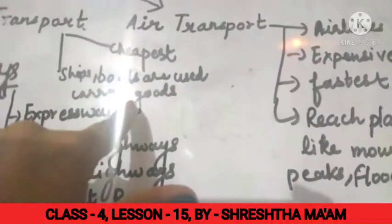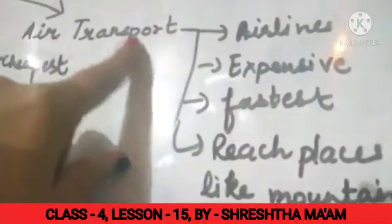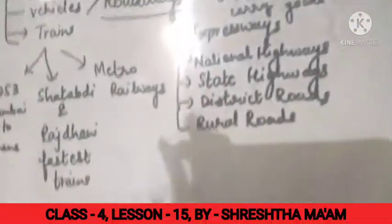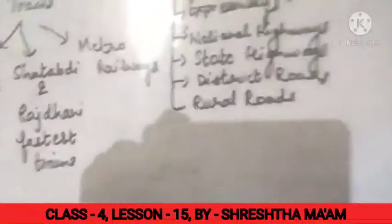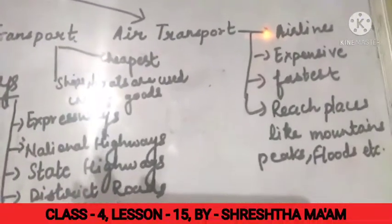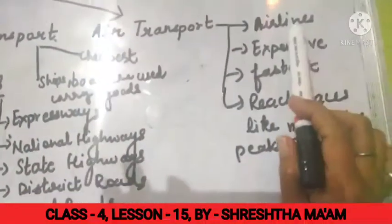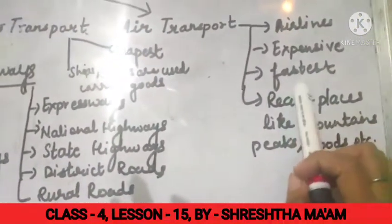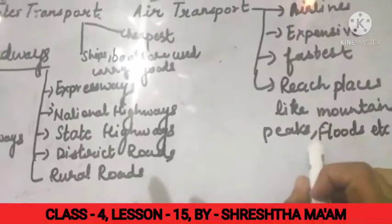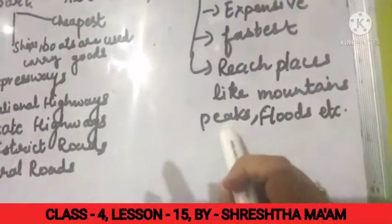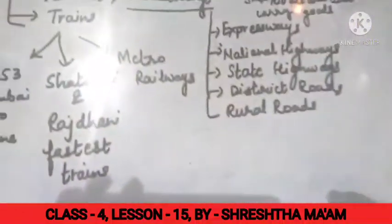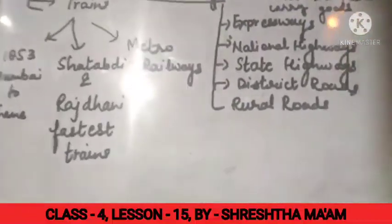Air transport consists of things by which we can travel from one place to another through the air. Airlines are very expensive — they are the fastest means of transport. They can reach places like mountain peaks and flood-affected areas where other transport cannot reach.